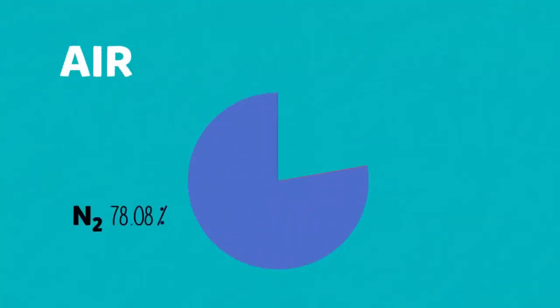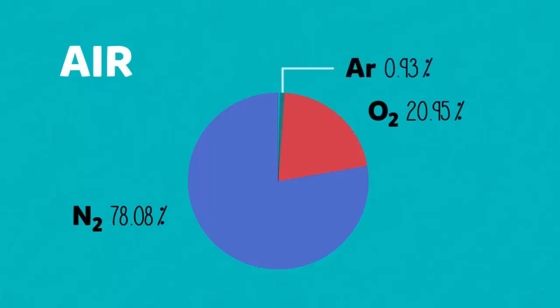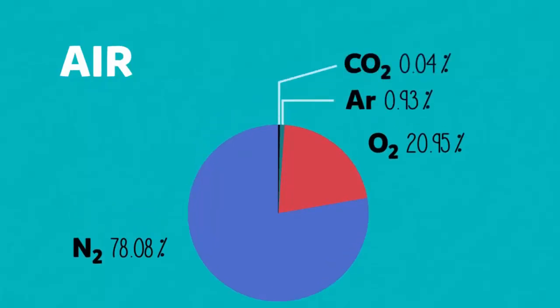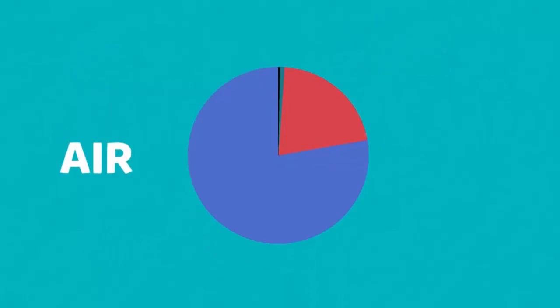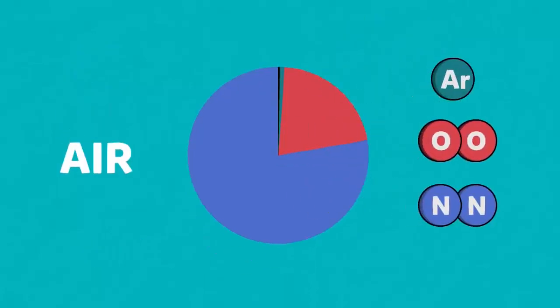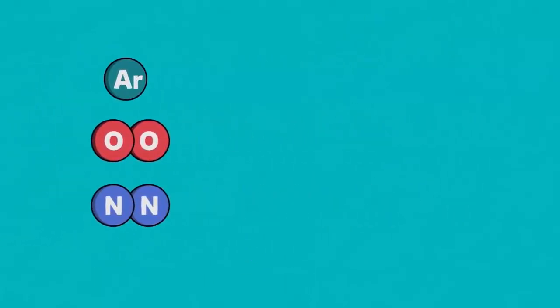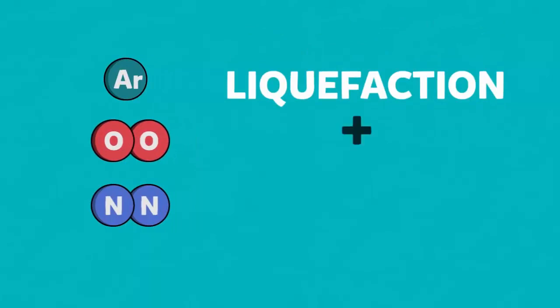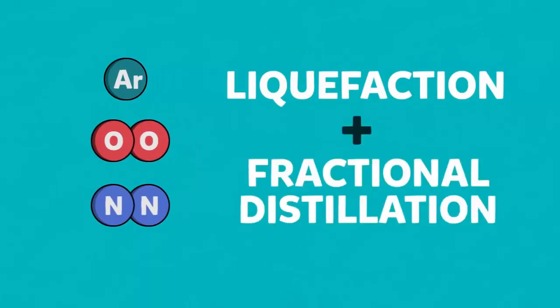The approximate composition of the air today is 78.08% nitrogen, 20.95% oxygen, 0.93% argon, 0.04% carbon dioxide, and between 0% and 4% water vapour. Nitrogen, argon and oxygen can be separated from the air by liquefaction followed by fractional distillation.